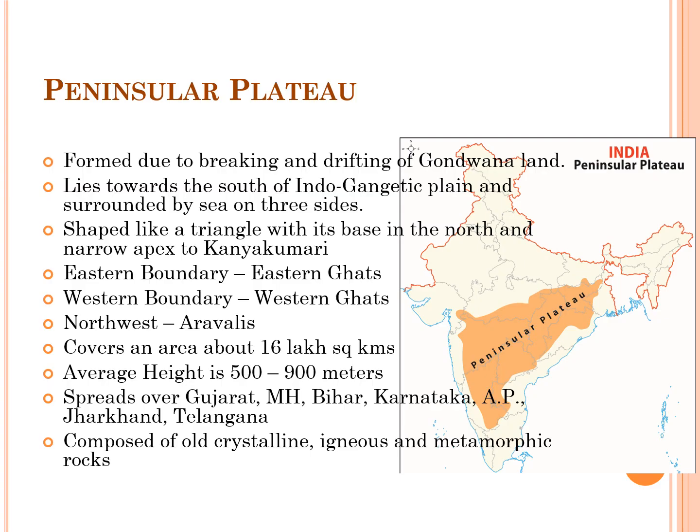The Peninsular Plateau or Peninsular India is the name given to the area spreading to the south of the Indo-Gangetic Plain, and it is surrounded by sea on three sides. This plateau is shaped like a triangle with its base in the north and a narrow apex towards Kanyakumari in the south. The general slope of the land is towards the north, and the rivers rising in this part flow northwards and join rivers of the Ganga system.